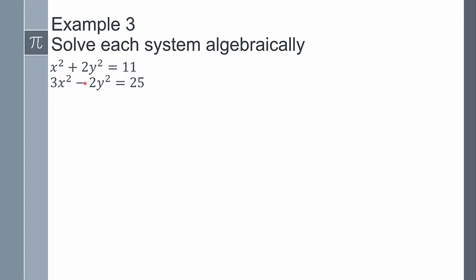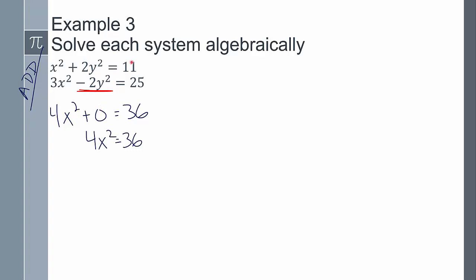Because those y coefficients are opposites, when I add the equations together, negative 2y and positive 2y cancel out. Adding the equations: x squared plus 3x squared gives 4x squared, the y terms add to zero, and 11 plus 25 gives 36. Now I have a new equation with just 4x squared equals 36. Dividing both sides by four and taking the square root gives x equals plus or minus 3.